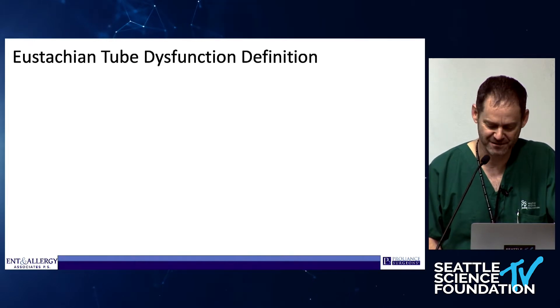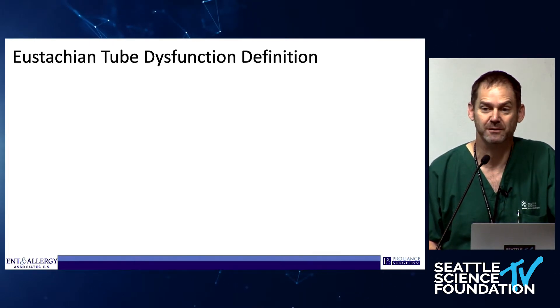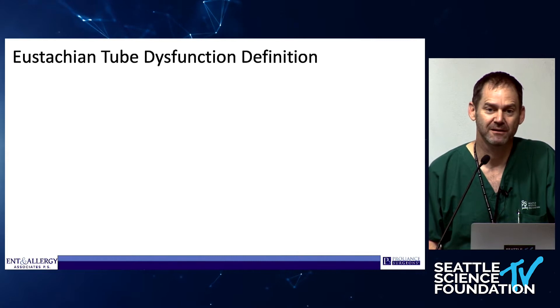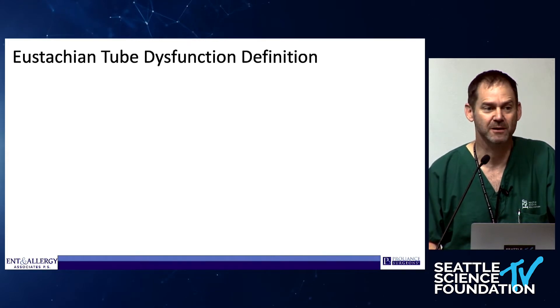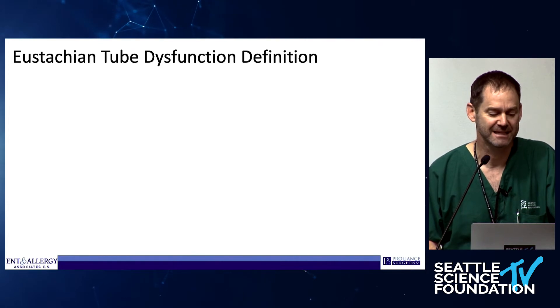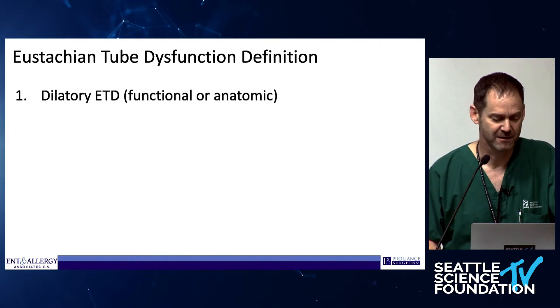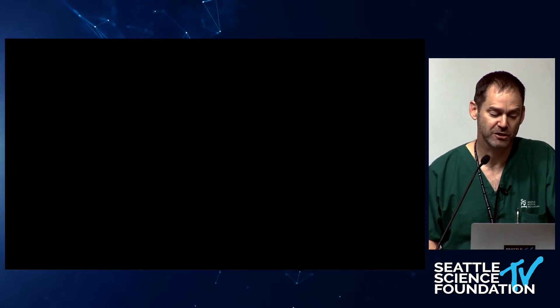It's a challenge because a lot of these patients, when you send them for an audiogram, they have pretty normal hearing and their tympanograms are type A. They only have dynamic or functional eustachian tube dysfunction.